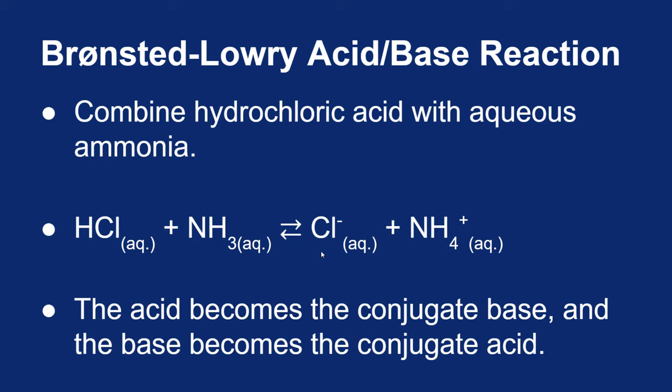When you reverse a reaction, you reverse a process. So the acid turns into the conjugate base — HCl turned into Cl minus — and the base turns into the conjugate acid — NH3 turned into NH4+.